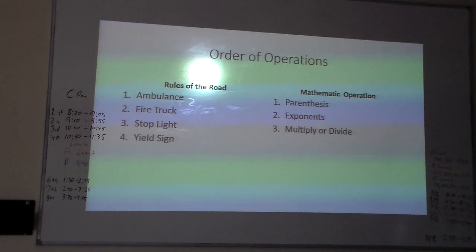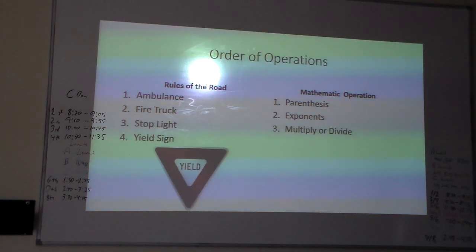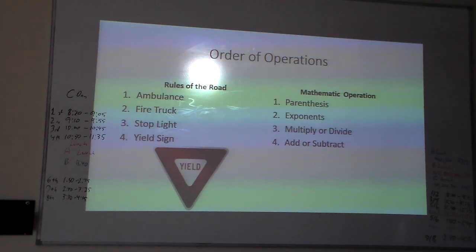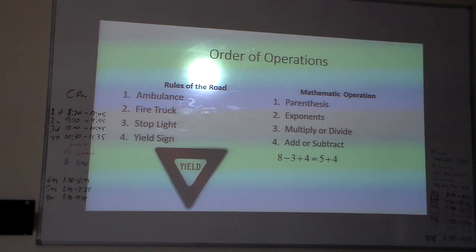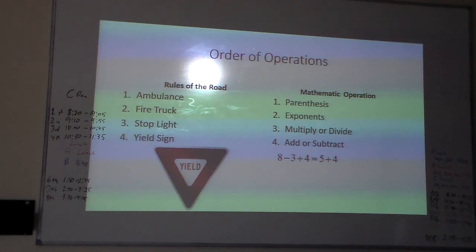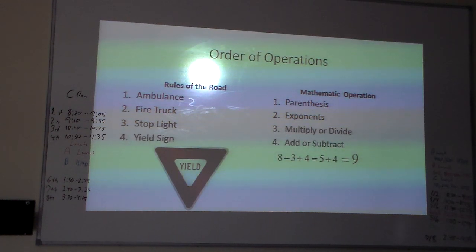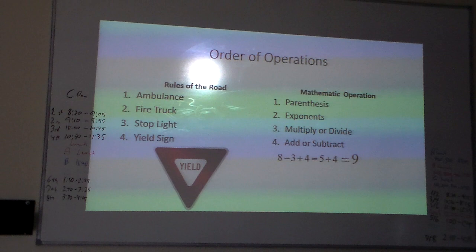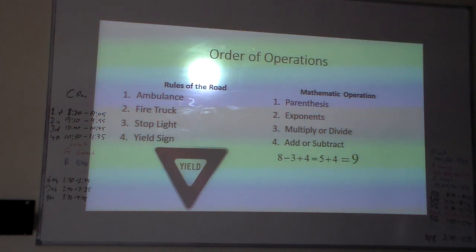My last example is the yield sign, because add and subtract are like multiply and divide — you do them in order from left to right, but you always do add or subtract after your multiplies or divides. So on this one, I would do 8 minus 3 first, which is 5, and 5 plus 4 is 9. I would not do 3 plus 4 just because it says add first, and take 8 minus 7 and get 1. You do it by order, because if you come to a yield sign, it doesn't mean you always stop — sometimes you stop, and sometimes you go.